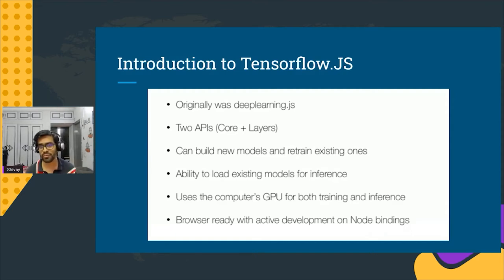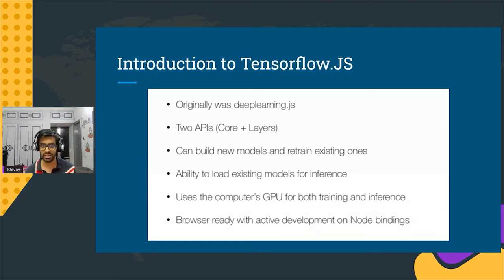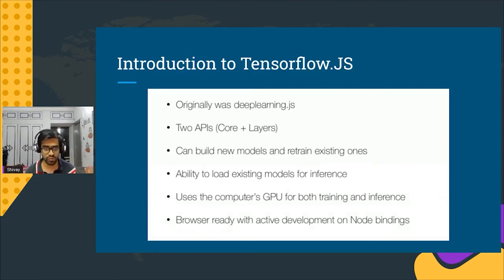One of the biggest issues for web developers is that JavaScript is the language of the web. If they had to introduce a machine learning model in their web applications, they had to either learn Python, collaborate with someone to use Python, create a machine learning model, deploy it to a server using Django or Flask, and then use it via APIs. If they had a full stack JavaScript application with Node backend and JavaScript frontend, they had to use a separate server and call it as an external API. The Google team wanted to give developers the ability to use machine learning models directly in JavaScript, and that led to the creation of TensorFlow.js.